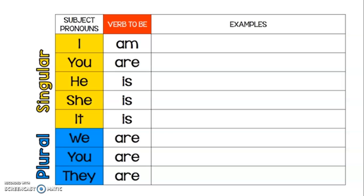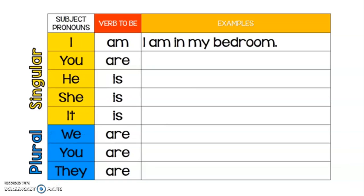Now we're going to look at some examples using these subjects and also the verb to be for each of them.